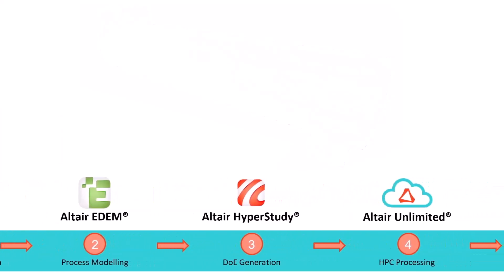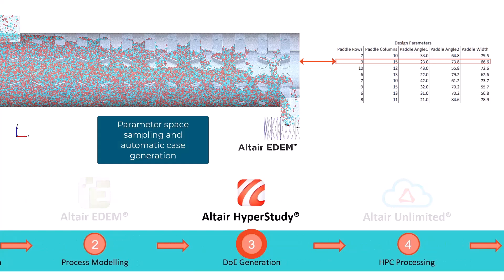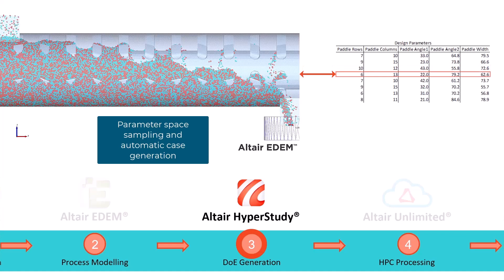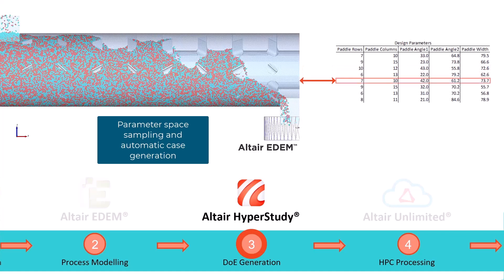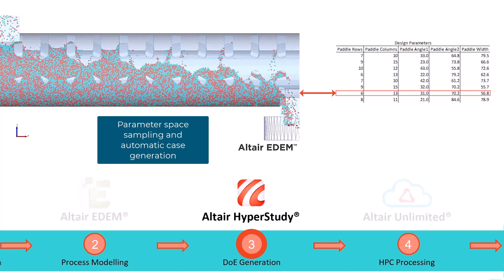In order to achieve rapid optimization of the design and operational parameters, we will need to build a machine learning model upon the simulation data. We need simulation data from a number of different mixer design and operational configurations, and we will therefore use HyperStudy to efficiently sample our parameter space and automate the case generation process in order to create a design of experiments, or DOE.